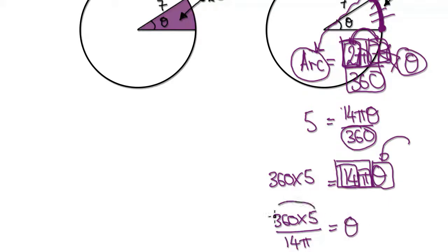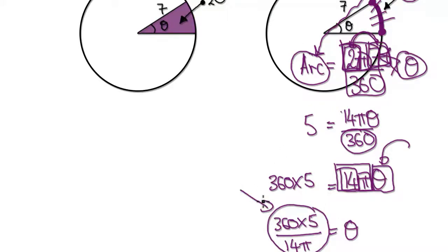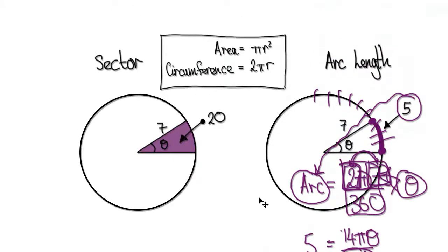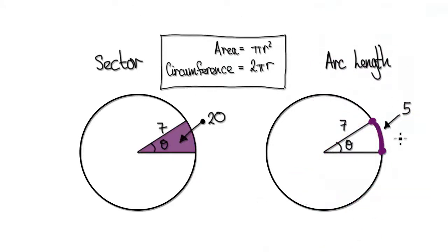The angle is given by this expression. Punch this into your calculator and that will then represent the angle here. When you have that angle, it will give you an arc length of 5.